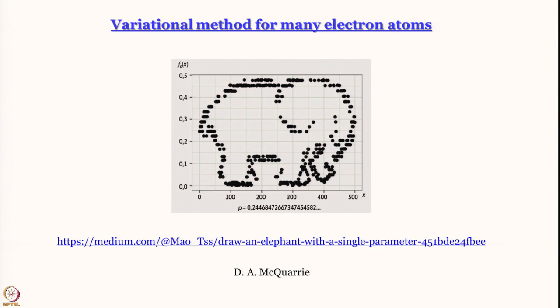What you need is a sufficient number of terms. If you go to this website you will see this is the picture of an elephant generated using a single parameter. I was actually looking for a picture of an elephant drawn using 30 exponential functions — I did not find it on the net, I found this — and the reason why we show this is that this is the way we are headed now. Until now we have been talking about exact solutions, approximate solutions, worrying about analytical form. Slowly we are entering a regime where we cannot do that any longer. It will all boil down to drawing the shape we require — like an elephant — using a suitable combination of functions, and the saving grace is the variation theorem or upper limit theorem, which tells you that you can never get an energy less than the actual energy.